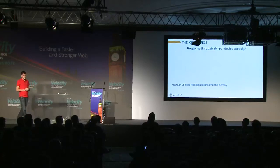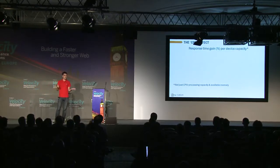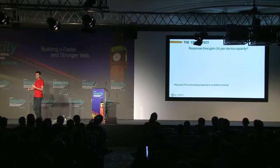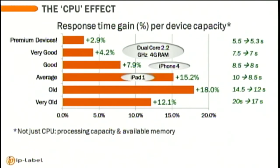Another impact that is quite rarely considered is the CPU, or device capacity — not just CPU, but all the capacity of the device to render a page, depending on the CPU, the memory, and all available capacity. I found out that very good devices with a lot of CPU and memory had a very limited gain, because they were already quite fast, within five to seven seconds. For these users, this optimization had almost no effect, whereas old devices had a very good effect because they were slower — between 15% and 80% gain. But the very oldest ones had less impact, because you can't do a lot for such old devices.